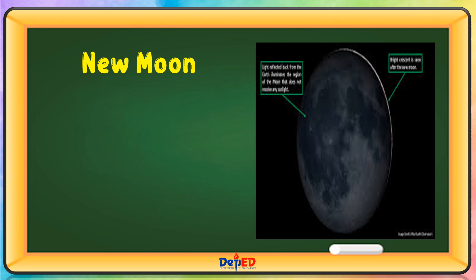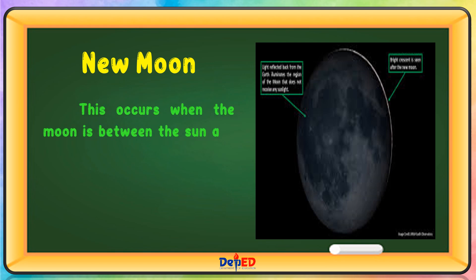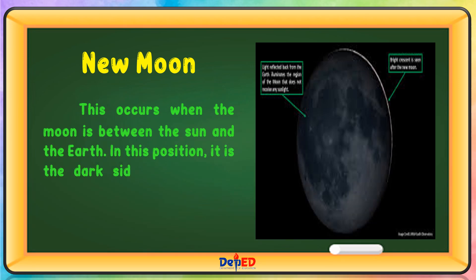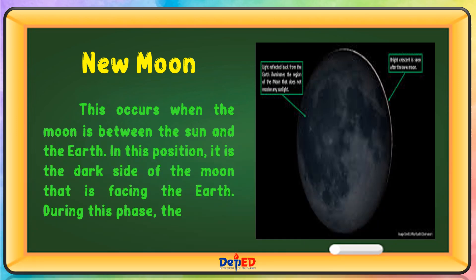New Moon — This occurs when the Moon is between the Sun and the Earth. In this position, it is the dark side of the Moon that is facing the Earth during this phase. The Moon is not visible from the Earth.